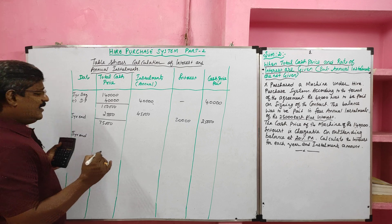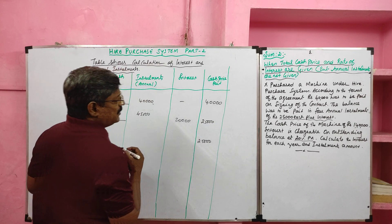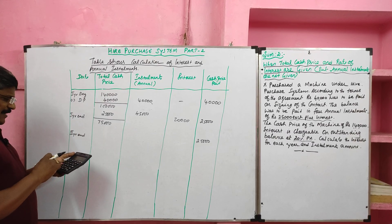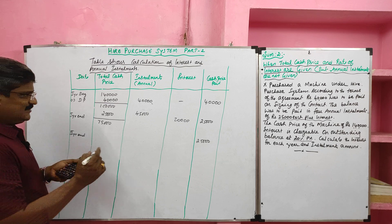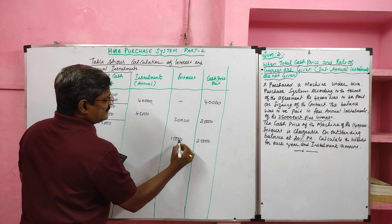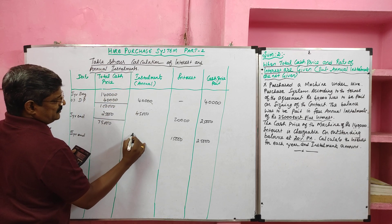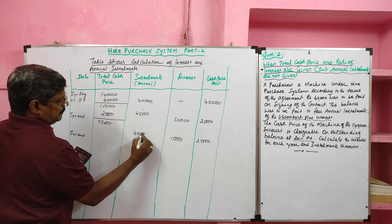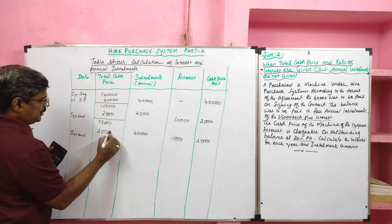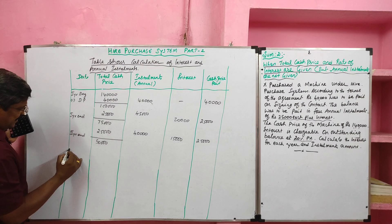At the second year end, again ₹25,000 is paid for the principal amount. Along with that, interest is calculated on ₹75,000 at 20%, which is ₹15,000. Adding interest and cash price gives the annual installment of ₹40,000. Deducting the cash price from the total cash price, the balance outstanding is ₹50,000.